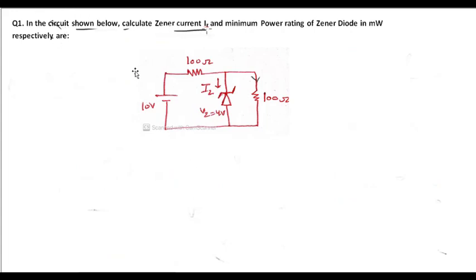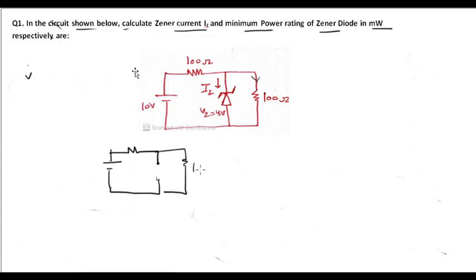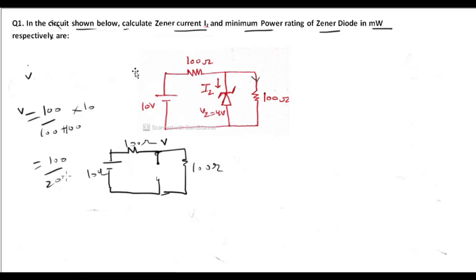Question 1: In the circuit shown below, calculate the zener current Iz and the minimum power rating P minimum of the zener diode in milliwatts. First, I am assuming the zener diode is off, so I can find the open-circuit voltage across the zener diode. Redrawing the circuit: 100 ohm, open-circuited, 100 ohm, 100 ohm, and 10 ohm. Applying the voltage divider rule: V = 100 / 200 × 10 = 5 volt when the diode is off.